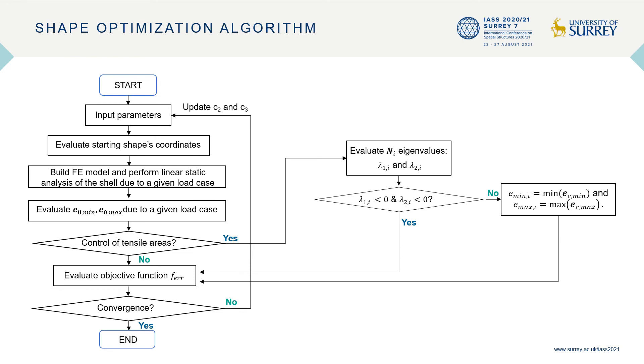The eccentricities that result from these computations are used to evaluate the objective function. If convergence is reached, the process stops. Otherwise, the coefficients c2 and c3 are updated and the procedure is repeated until convergence.